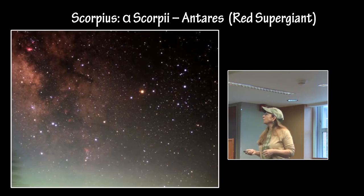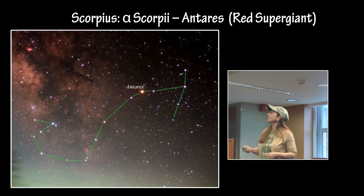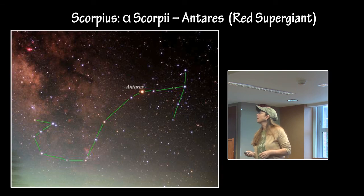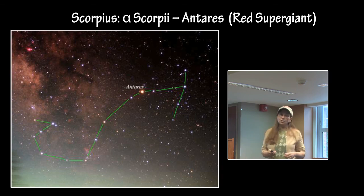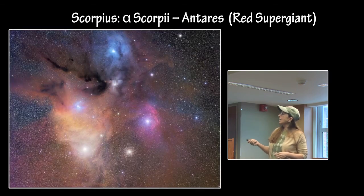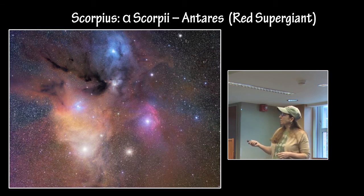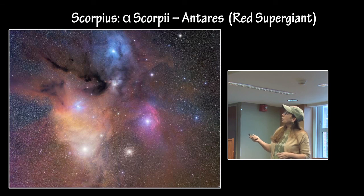Scorpius — Alpha Scorpii, or Antares, the heart of the Scorpion, is a red supergiant also on its way to collapse. Here is another picture of Antares, Alpha Scorpii, right here is Alpha Scorpii, and Rho Ophiuchi.